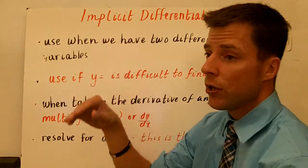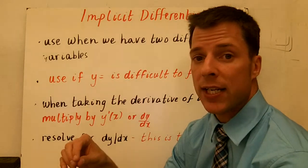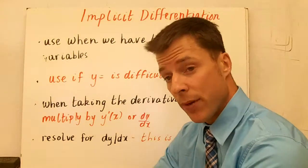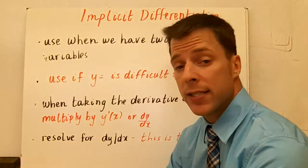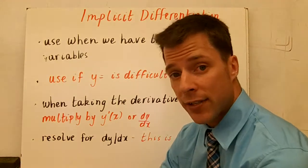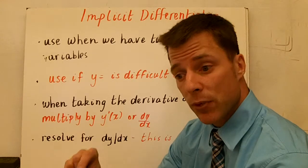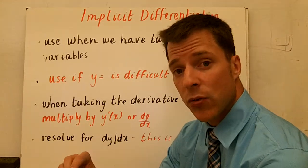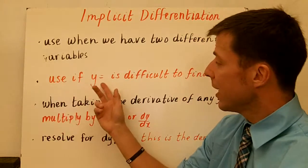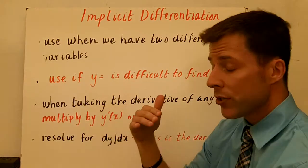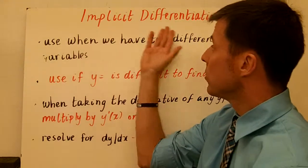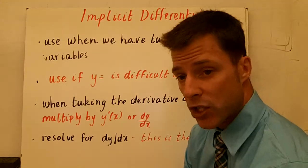A variable is not explicitly defined when we have y equals something. Say y equals sine of x — that's an equation explicitly solved for y. So if we can't get y equals easily, we're going to use implicit differentiation.